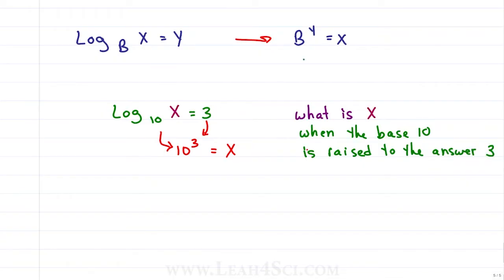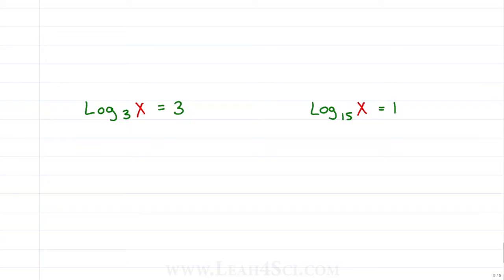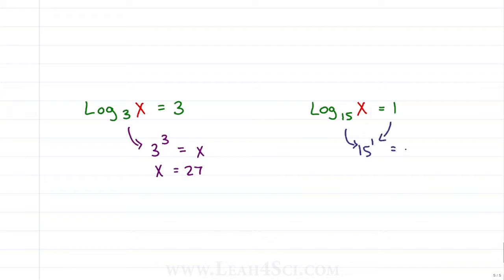Our new simplified problem is 10 to the third equals x. Going back to the original question, we really have 3 to the power of 3 equals x. 3 times 3 is 9, times 3 is 27, so x equals 27. For another example, 15 to the power of 1 equals x — any number raised to the first is that number, so x equals 15.